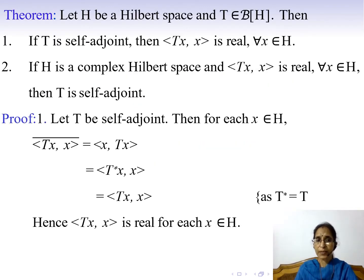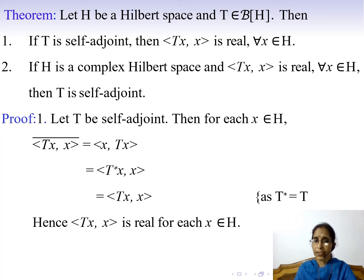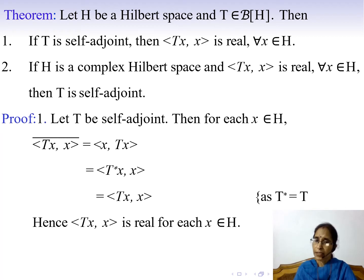The first theorem: let H be a Hilbert space and T be a bounded linear operator on H. Then, first result: if T is self-adjoint, then the inner product ⟨Tx, x⟩ is real for every x in H. Second result: if H is a complex Hilbert space and ⟨Tx, x⟩ is real for every x in H, then T is self-adjoint.